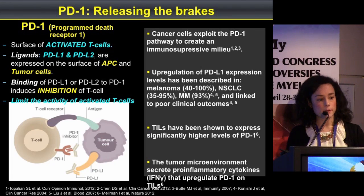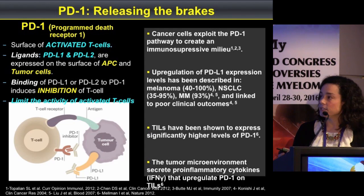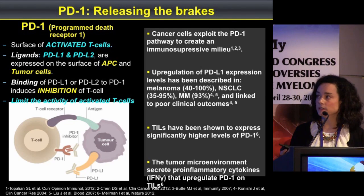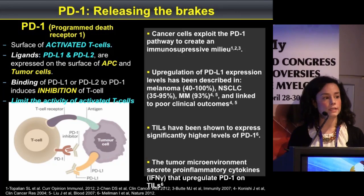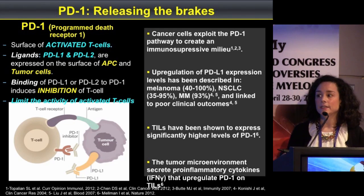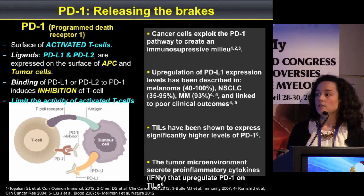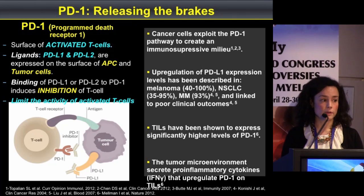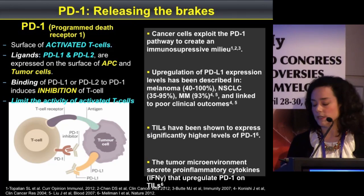Cancer cells use the PD-1/PD-L1 pathway to create an immunosuppressive milieu, in part due to up-regulation of PD-L1 on the tumor cell. This has been shown in different tumor types including melanoma, multiple myeloma, and non-small cell lung cancer, among others, and is linked to worse outcomes. There is also increased expression of PD-1 on tumor-infiltrating lymphocytes, in part related to secretion of pro-inflammatory cytokines like interferon-gamma in the tumor microenvironment, which up-regulates PD-1 on lymphocytes.